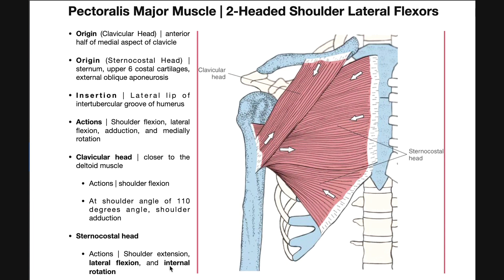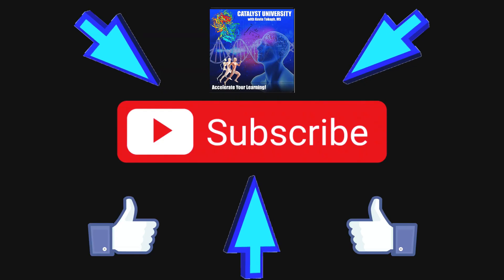One thing to mention about lateral flexion: you may see it written as horizontal adduction. The term lateral flexion makes more sense because it's flexion of the shoulder occurring in the horizontal plane. Hopefully this video gave you a good understanding of the pectoralis major muscle. Please make sure to like this video and subscribe to the channel for future videos and notifications.